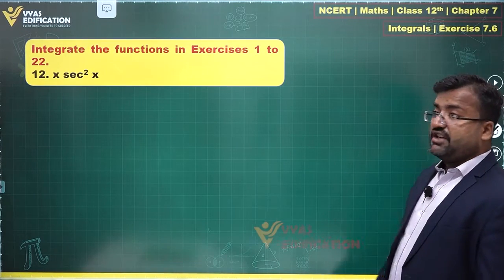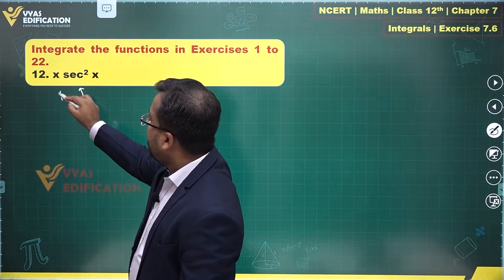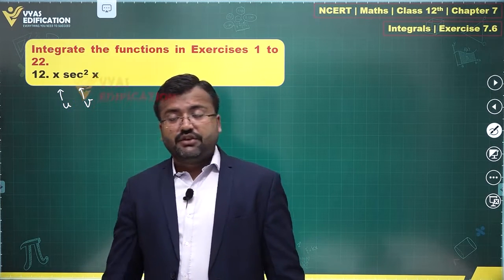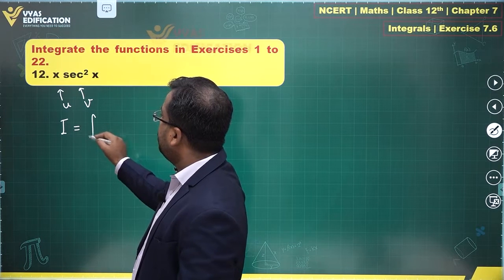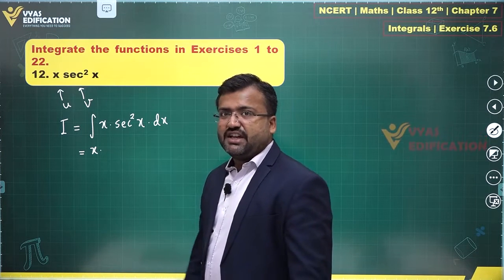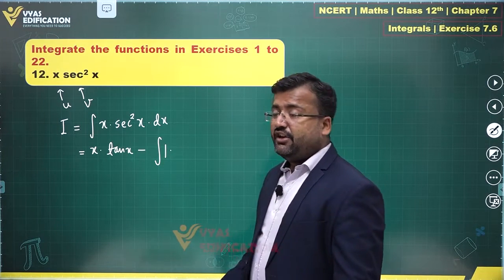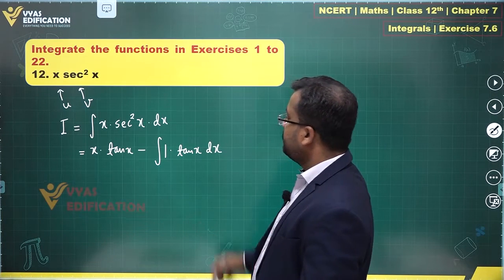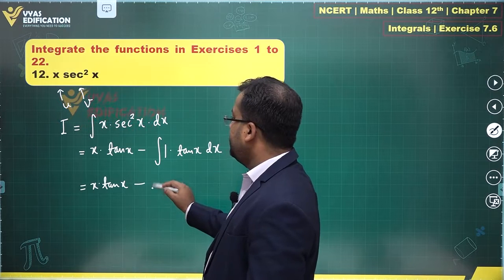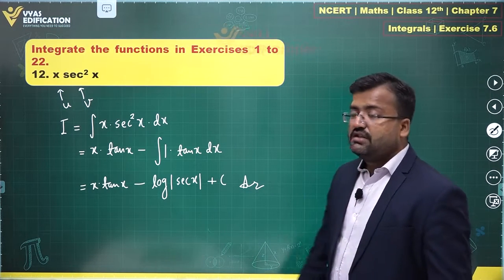The twelfth question: integrate x·sec²(x). Algebraic and trigonometric — x is u, sec²(x) is v, integral of sec²(x) is tan(x). I = x·tan(x) minus integral of 1·tan(x) dx = x·tan(x) − log|sec(x)| + C.